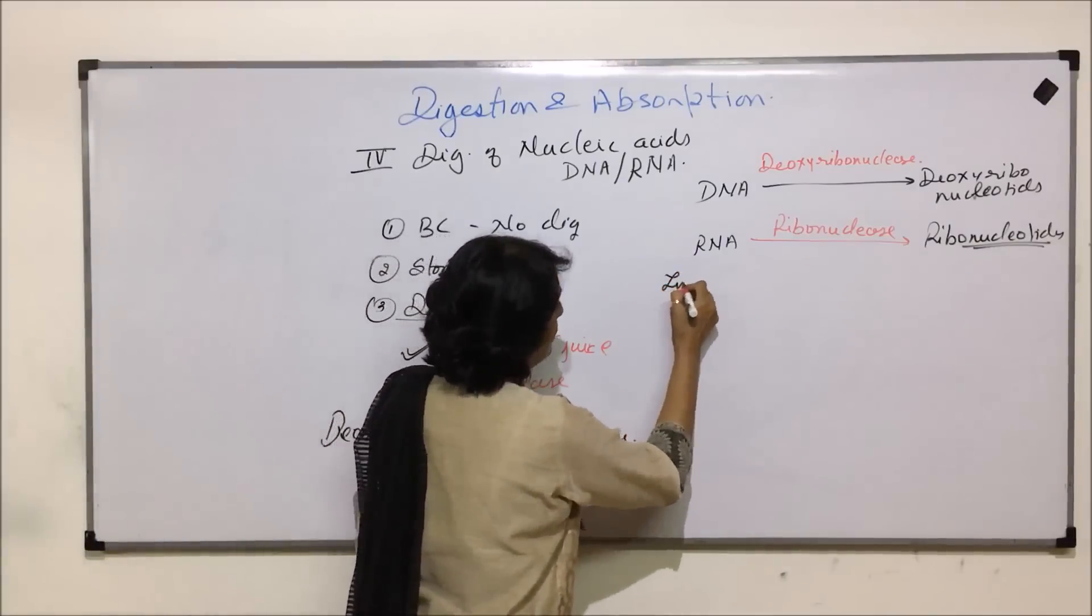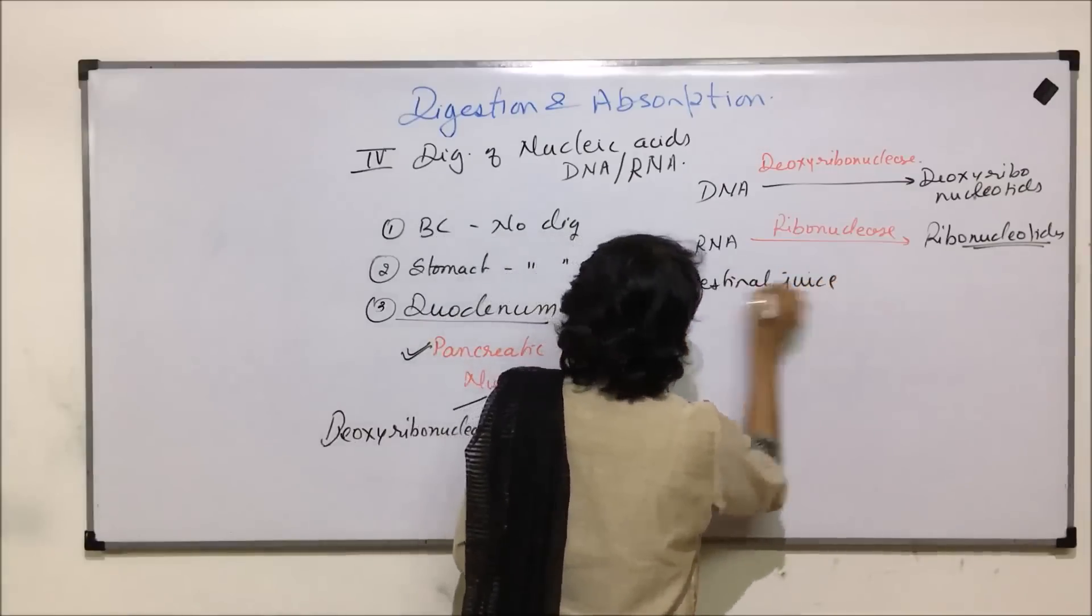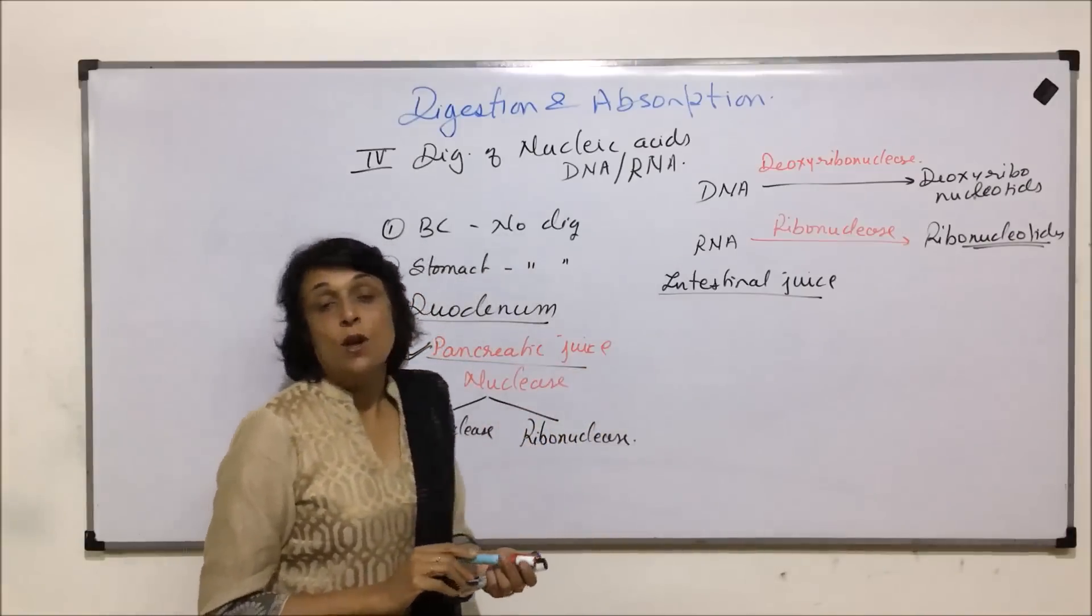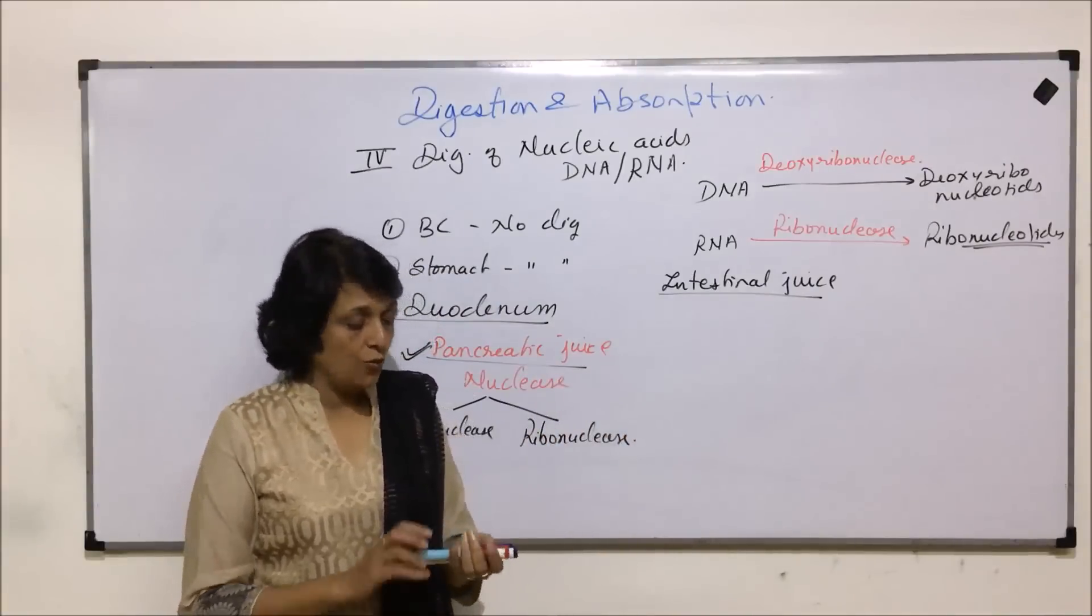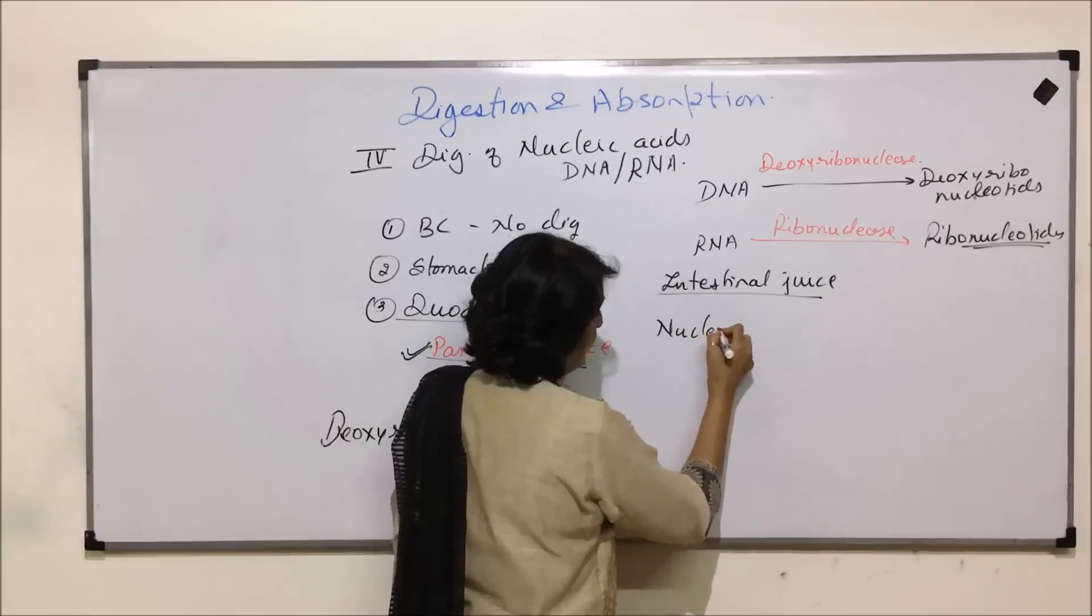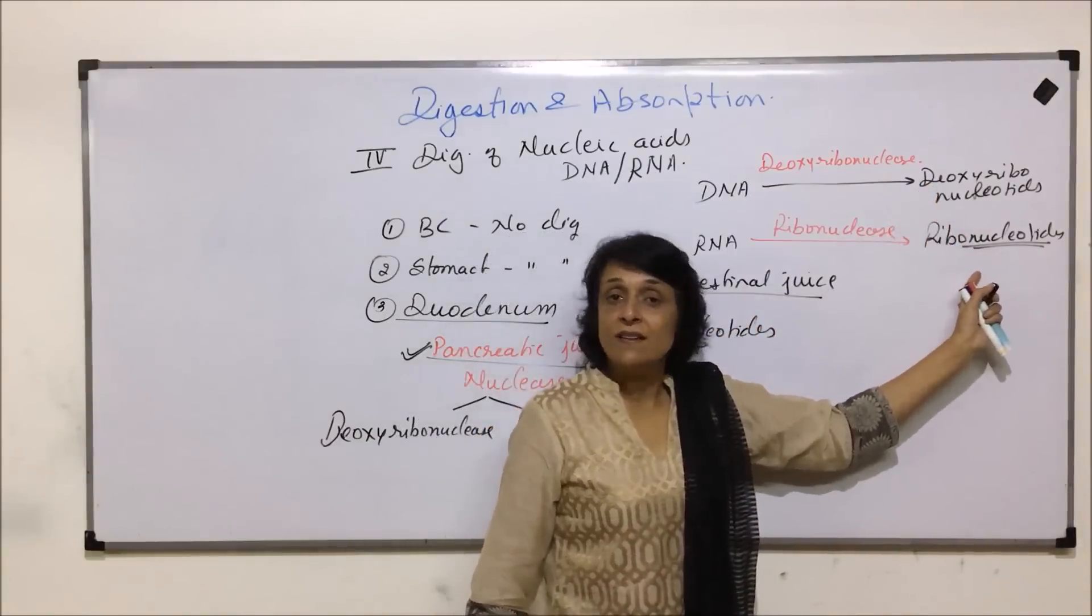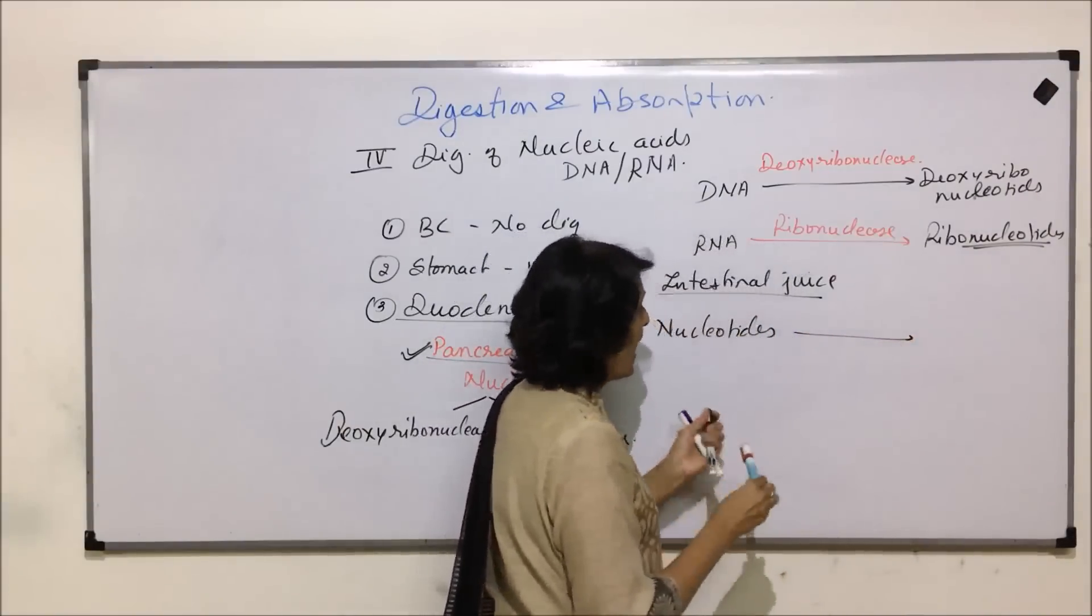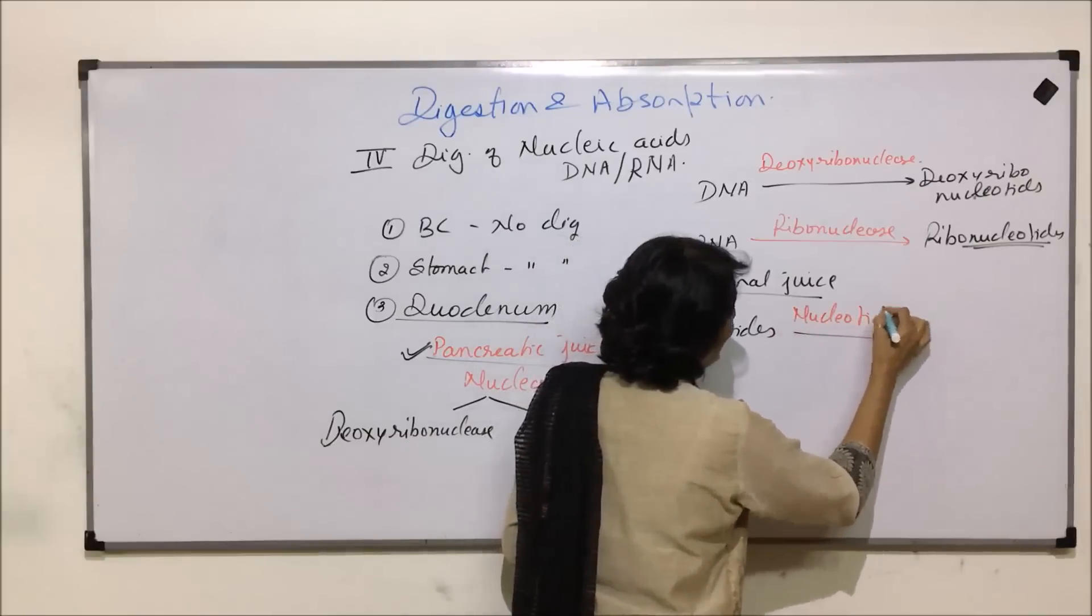Then intestinal juice. Intestinal juice has two enzymes: one is nucleotidase and other is nucleosidase. The nucleotides, both deoxyribonucleotides as well as simple ribonucleotides, they are acted upon by nucleotidases.